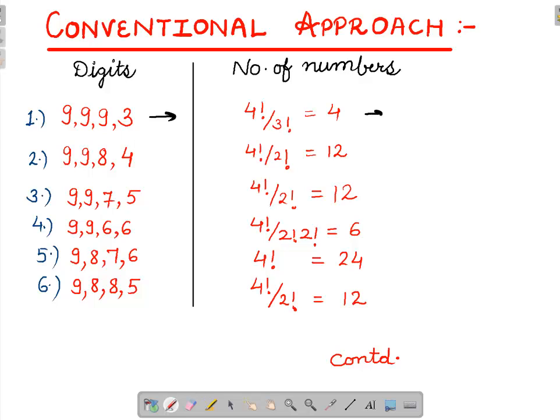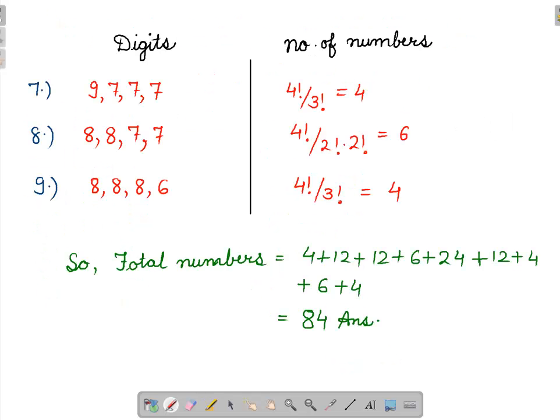they can be permuted in these many ways. Since 3 of them are same, so if we make these many cases, we will get 9 cases. Corresponding to every case, we will calculate the arrangement, then the answer will become 84.